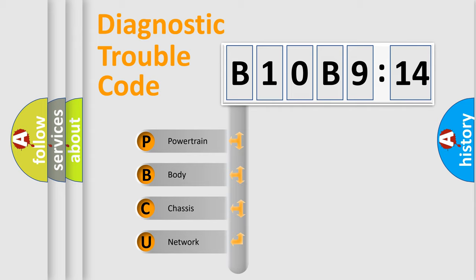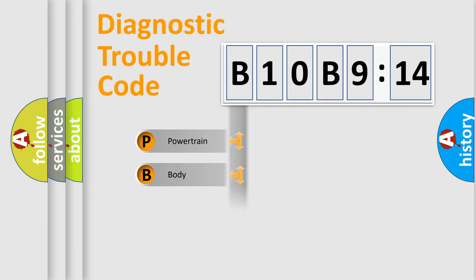We divide the electric system of automobile into the four basic units: Powertrain, Body, Chassis, and Network.